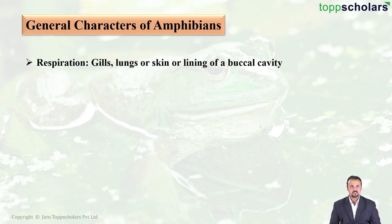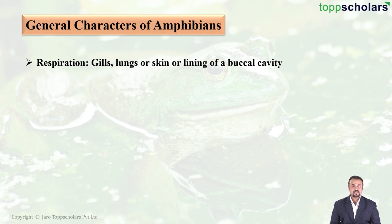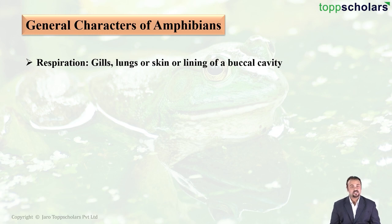Now let us look at their mode of respiration. If the amphibian is underwater, it respires using gills, skin, or the lining of the buccal cavity, also called the buccal epithelium. But when they come on land, just like any other terrestrial animal, they breathe using their lungs.